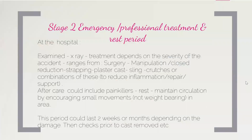Moving on to Stage 2, that is emergency or professional treatment and the risk period. At the hospital, we examine the patient by X-ray and MRI. The treatment depends on the severity of the accident or trauma, and ranges from surgery, manipulation, closed reduction, strapping, plaster cast, to sling and structures. After care could include painkillers, rest, maintaining circulation by encouraging small movements, non-weight bearing in the area, and immobilizing the site of injury. In early phases, immobilization is very important to heal the injured site. This period could last up to two weeks or months depending on the damage.